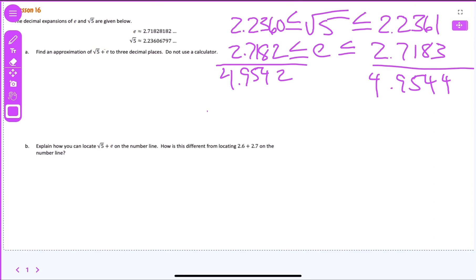So now we would say that the square root of 5 plus e is greater than or equal to 4.954, let's just go ahead and round it, less than 4.954. So what would be a good estimation of these two numbers? Well, combined, they would be 4.954. Everybody see how we did that?